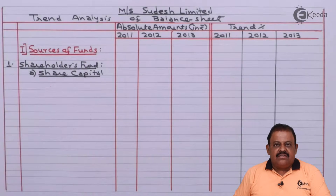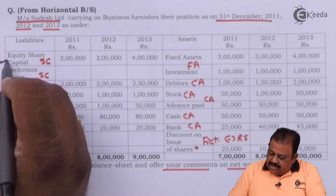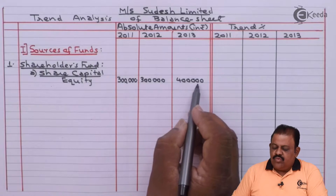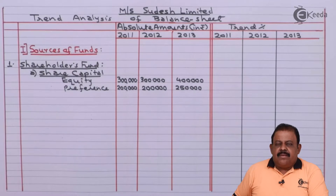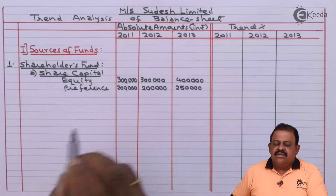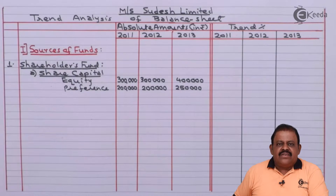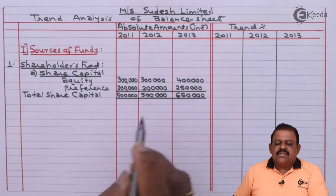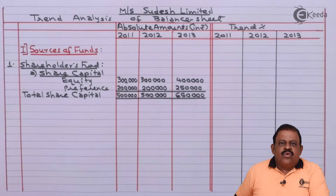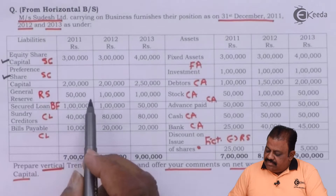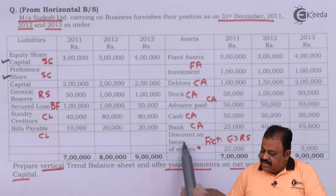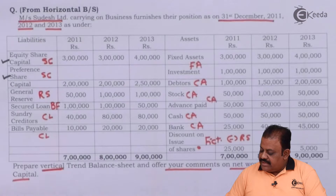Under shareholders fund, the first item is share capital. Equity share capital is 3 lakhs, 3 lakhs, and 4 lakhs. Preference share capital is 2 lakhs, 2 lakhs, and 2 lakhs 50 thousand. Total share capital is 5 lakhs, 5 lakhs, and 6 lakhs 50 thousand. To this we add general reserve: 50 thousand, 1 lakh, and 1 lakh. From this we deduct the fictitious asset — discount on issue of shares — which is 25 thousand, 10 thousand, and 5 thousand.